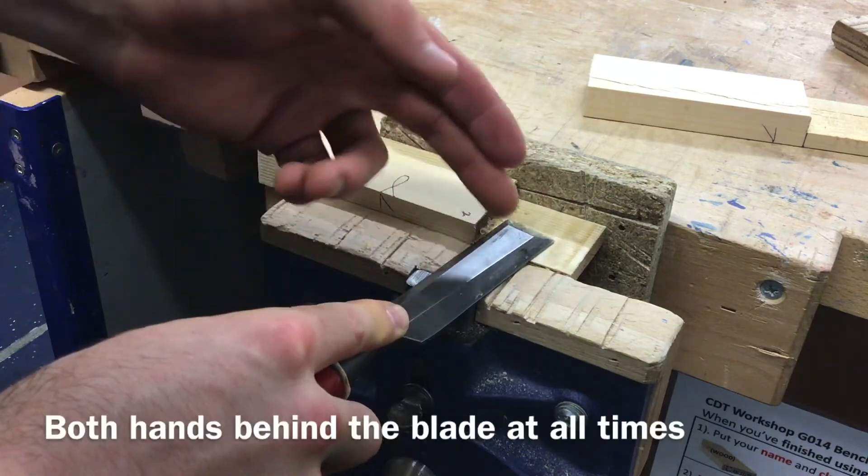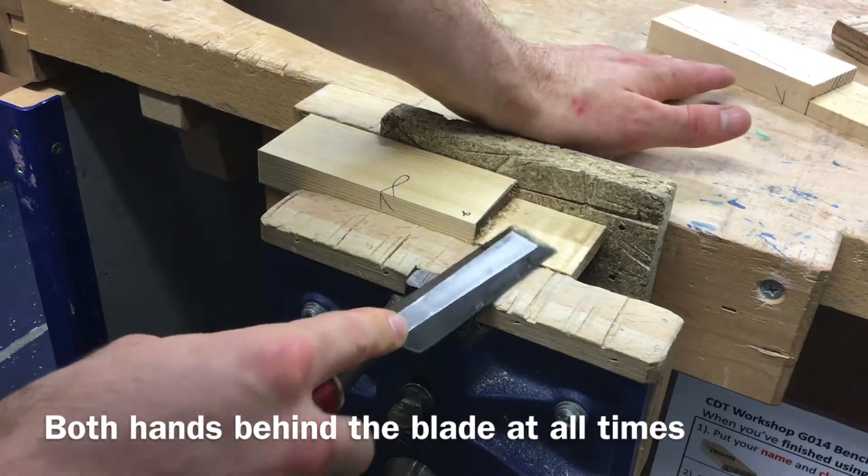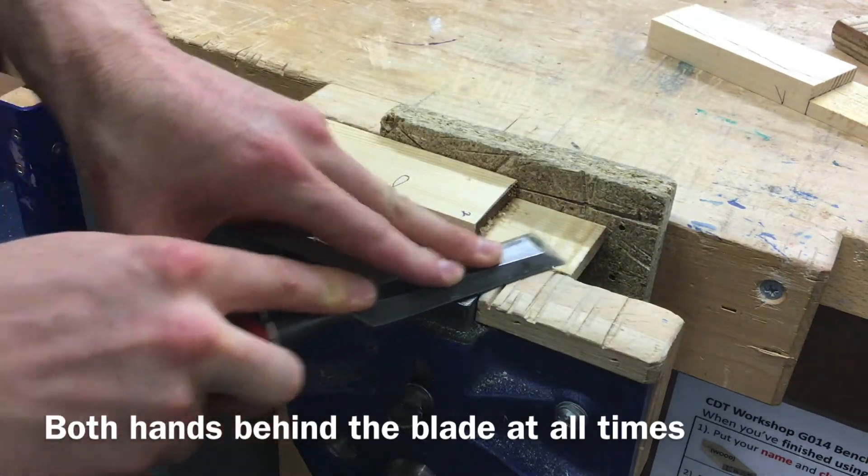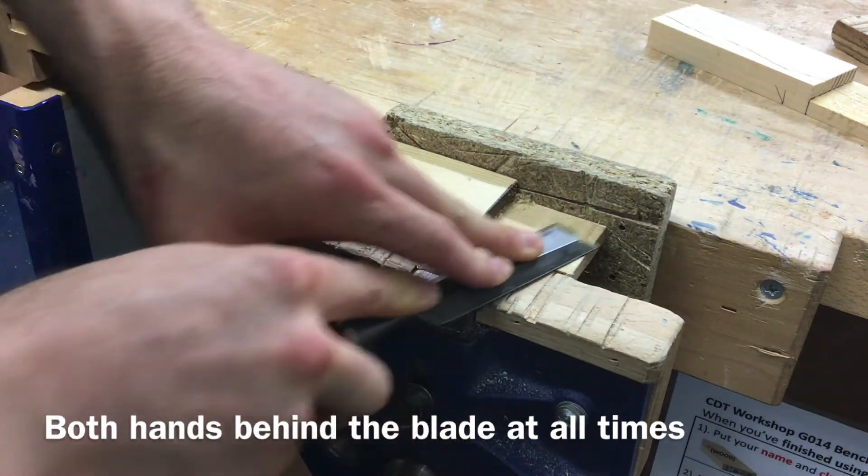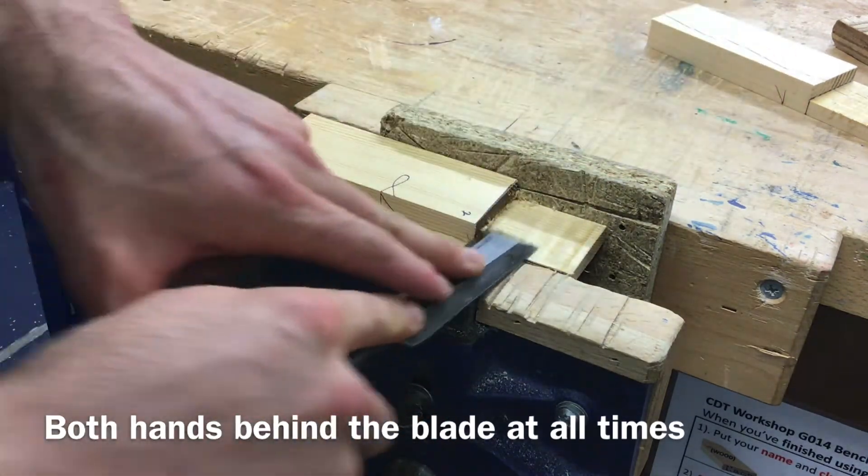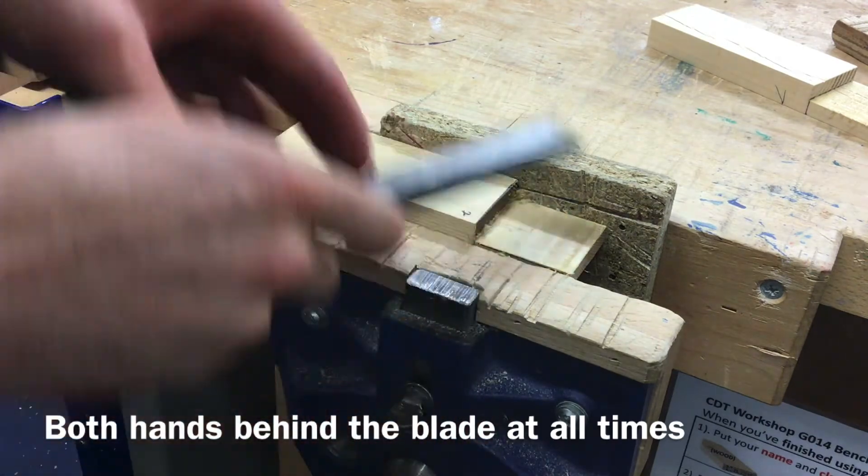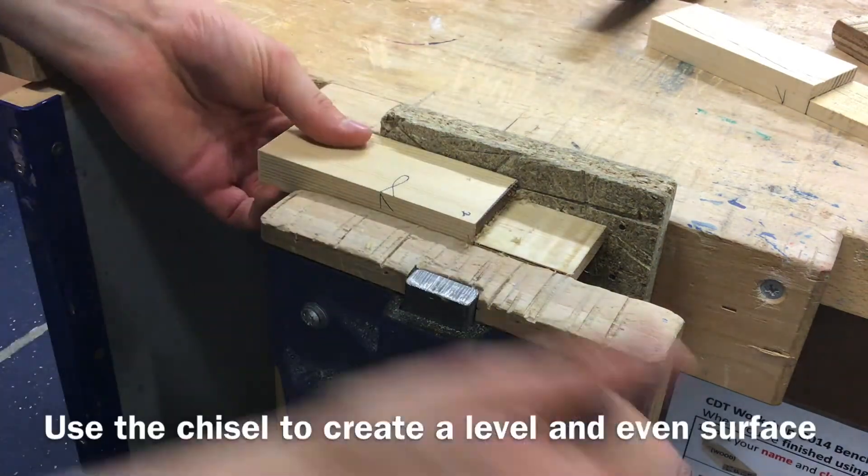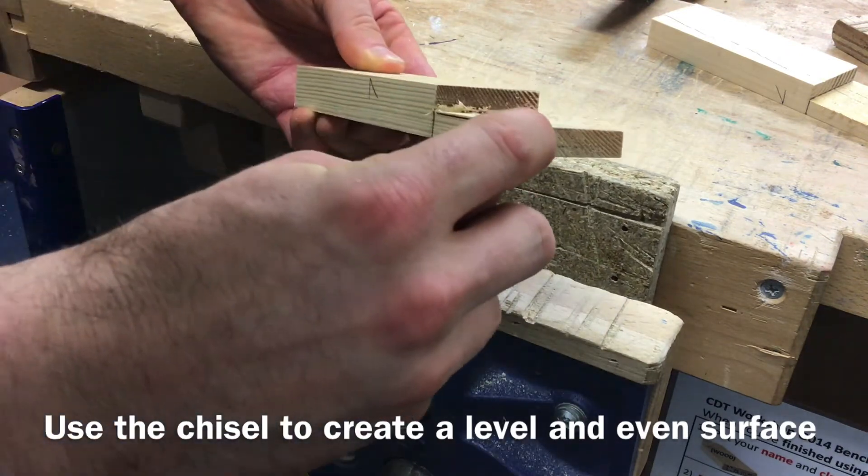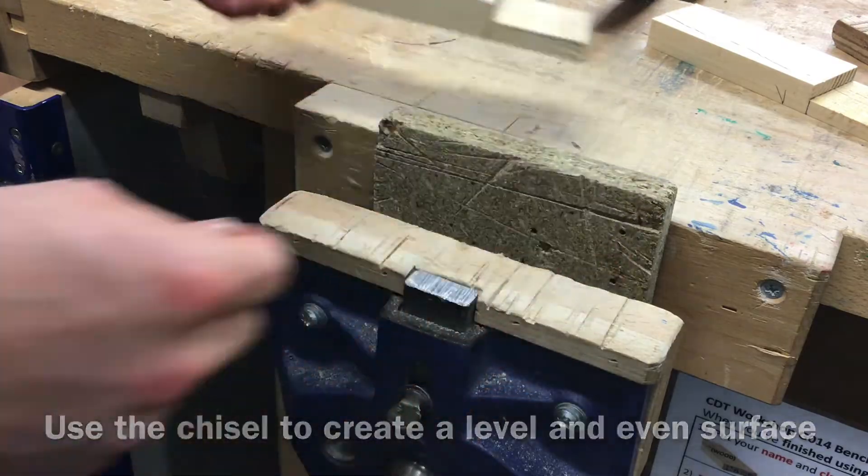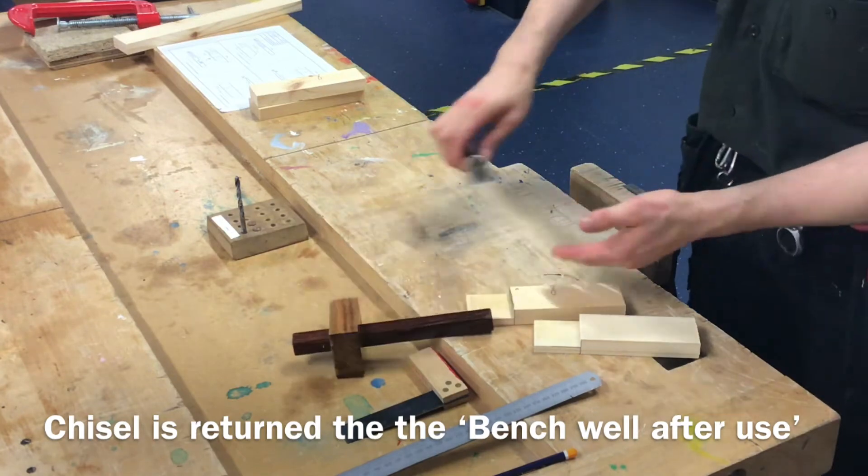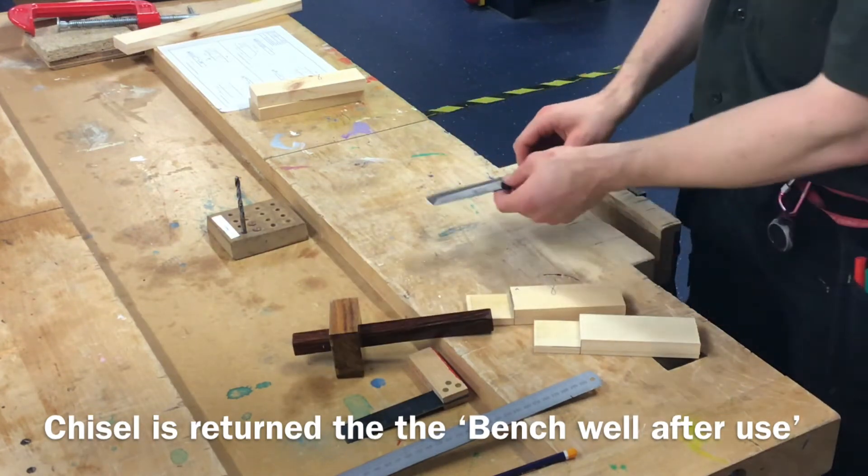Two hands behind the blade, never one hand in front. You run the risk of catching yourself. That's an absolute no-no. I can use that to go across the grain, and what that helps with is stopping the material splitting. I've got the sacrificial board here to stop the material splitting and I'm trying to get it so it's level and even all the way around. I can see my line all the way around as I've cut. When using the chisel, every time we've used it return it to the well of your bench, don't leave it hanging over the edge.